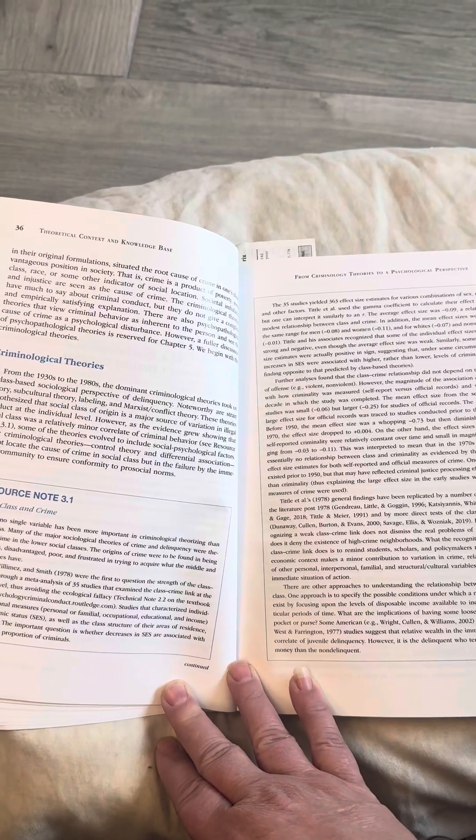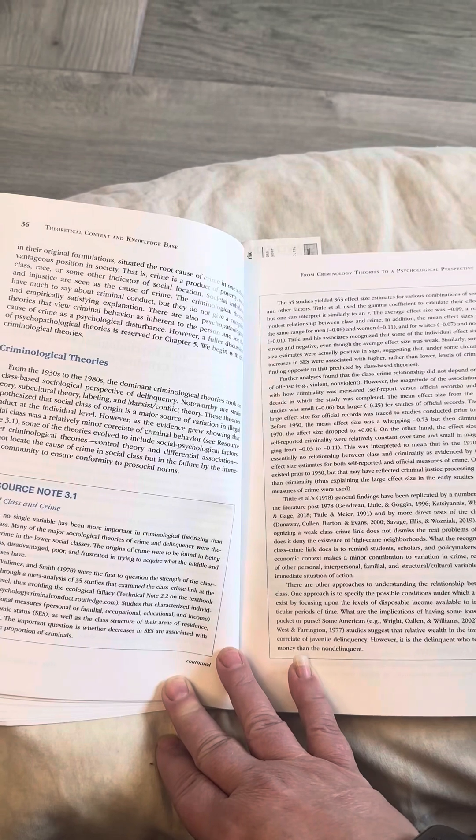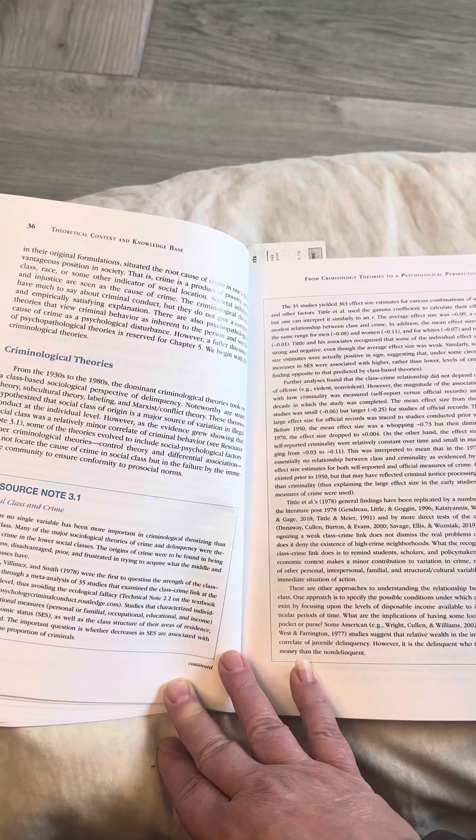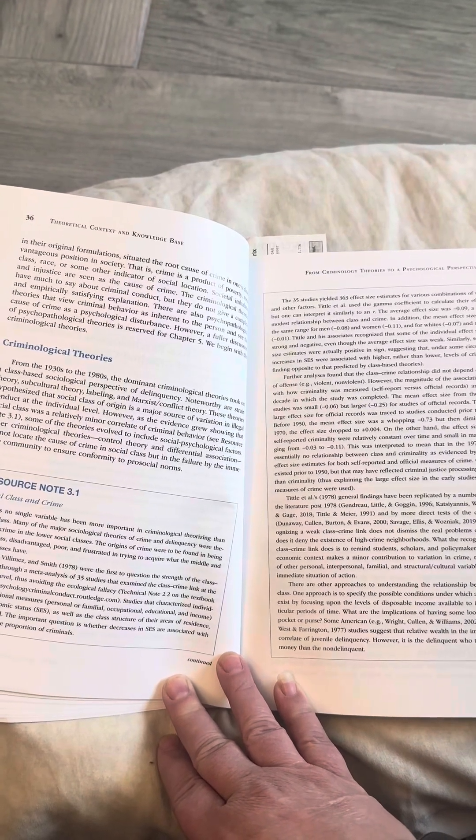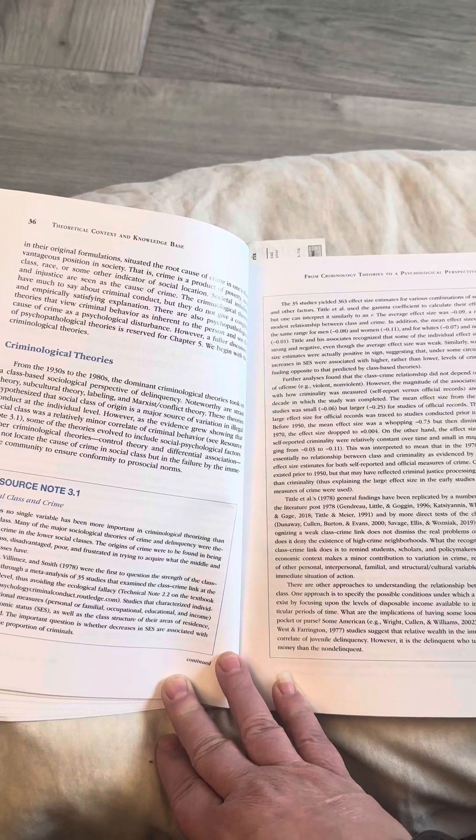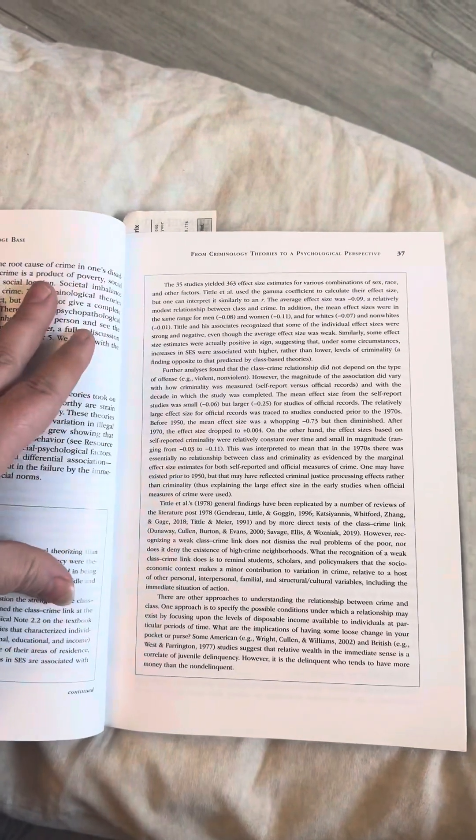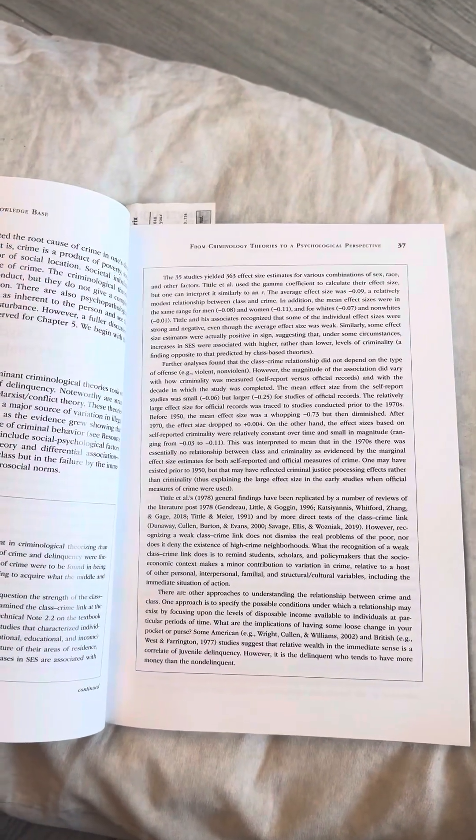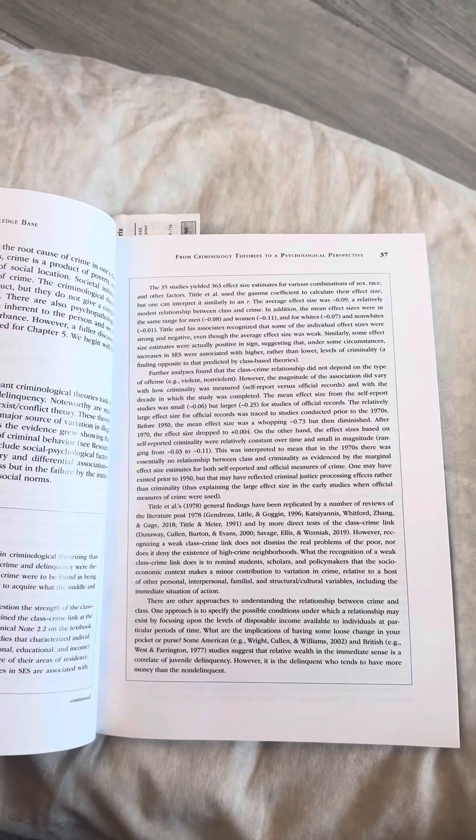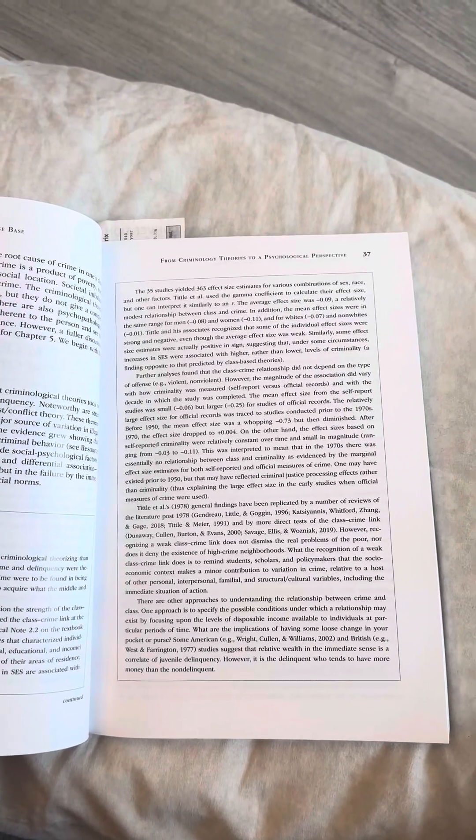Studies that characterize individuals in traditional measures, personal or familial, occupational, educational, and income, the socioeconomic status, SES, as well as the class structure of their areas of residence, were included. The important question is whether decreases in SES are associated with increases in the proportion of criminals. The 35 studies yielded 363 effect size estimates for various combinations of race, sex, and other factors. Tidal et al. used the gamma coefficient to calculate their effect size, but one can interpret it similarly to an R. The average effect size was negative 0.09, a relatively modest relationship between class and crime.